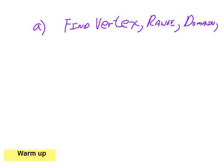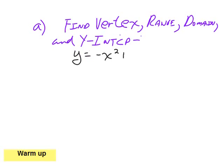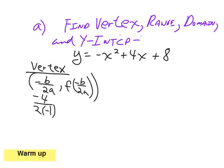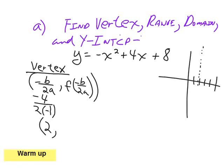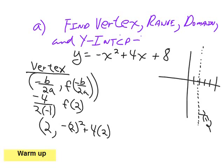Find the vertex, range, domain, and y-intercept again. Notice this one's a sad face — it's going to be upside down. The line of symmetry is at negative b divided by 2 times a. So it's going to be negative 4 divided by 2 times negative 1, which gives 2. You know the thing looks the same to the left of 2 as it does to the right of 2. Then you plug that 2 into the formula and you end up with negative 2 squared plus 4 times 2 plus 8 — the answer is 12. So your vertex is at 2 comma 12.